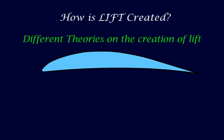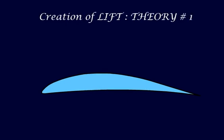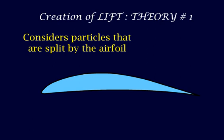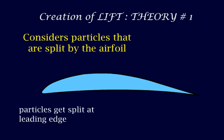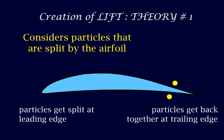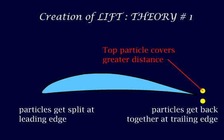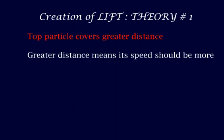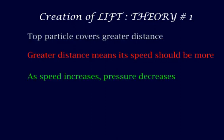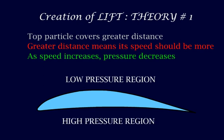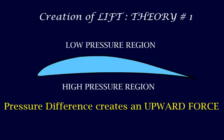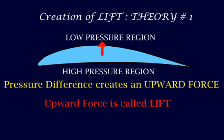To understand how lift is created there are different theories — theory number 1, theory number 2 and theory number 3. Theory number 1 considers particles that are split by the airfoil. Two particles get split at the leading edge and meet back together at the trailing edge. The particle on top covers the greater distance, which means its speed should be more. As the speed increases the pressure decreases, causing a low pressure region on the top and a high pressure region at the bottom. This difference causes an upward force which is called lift.